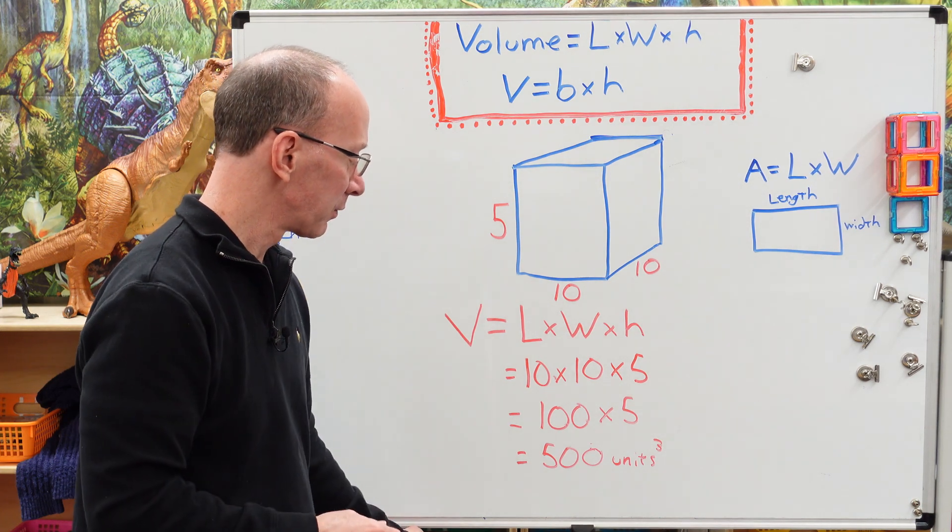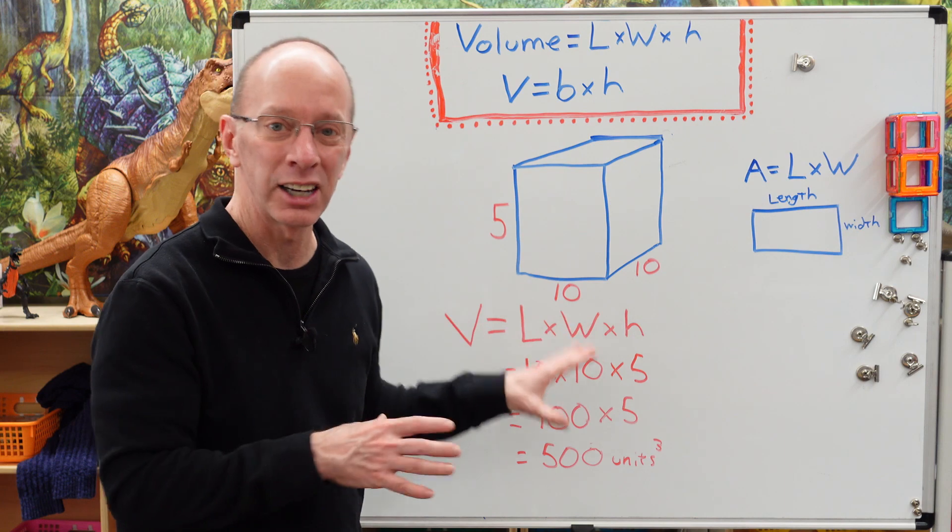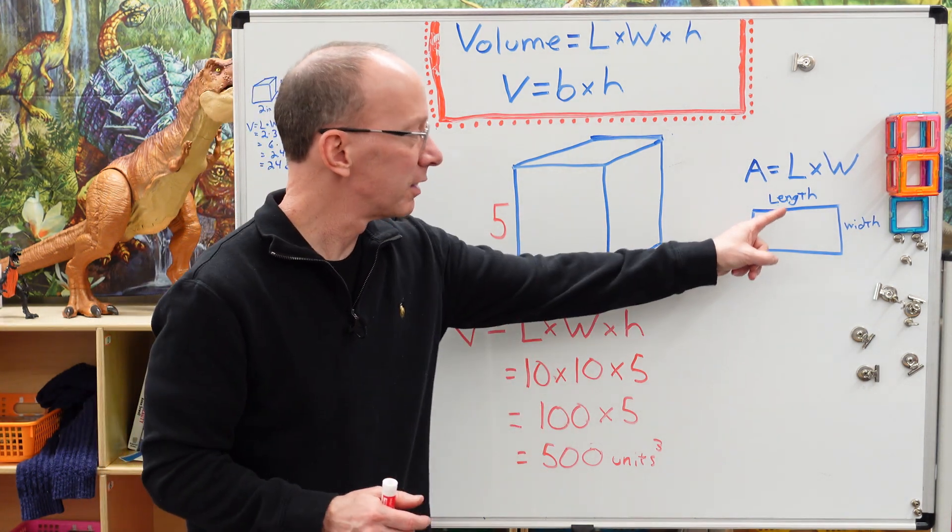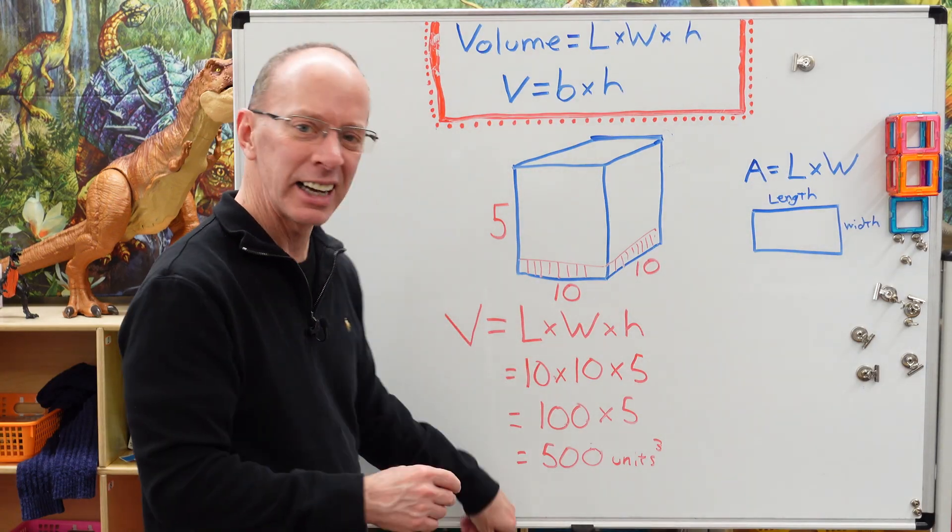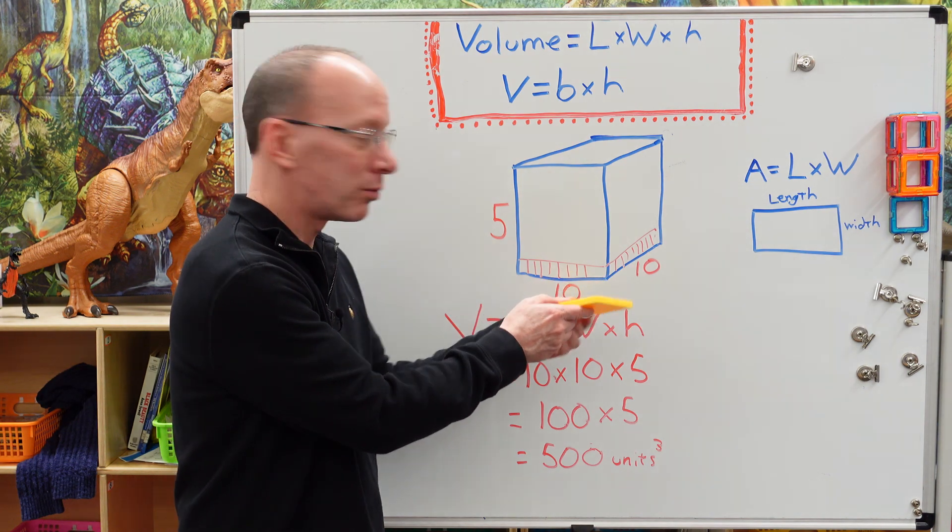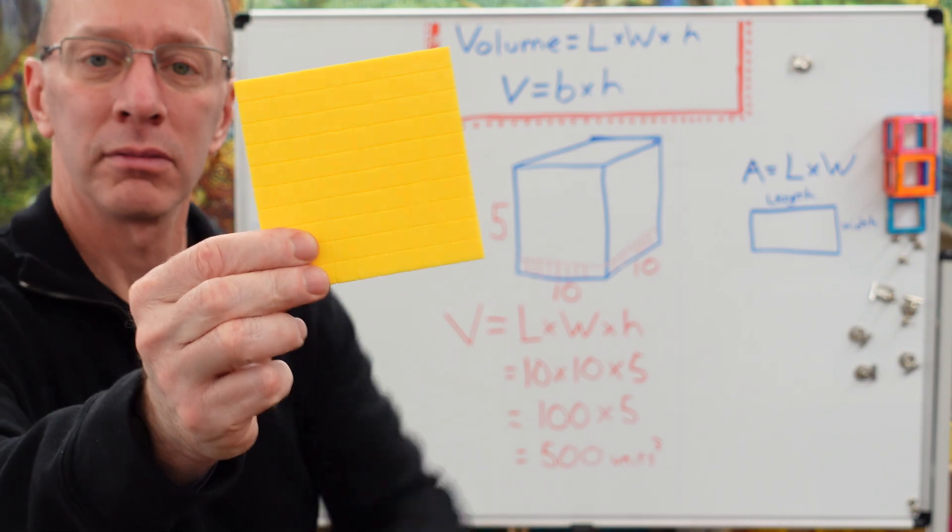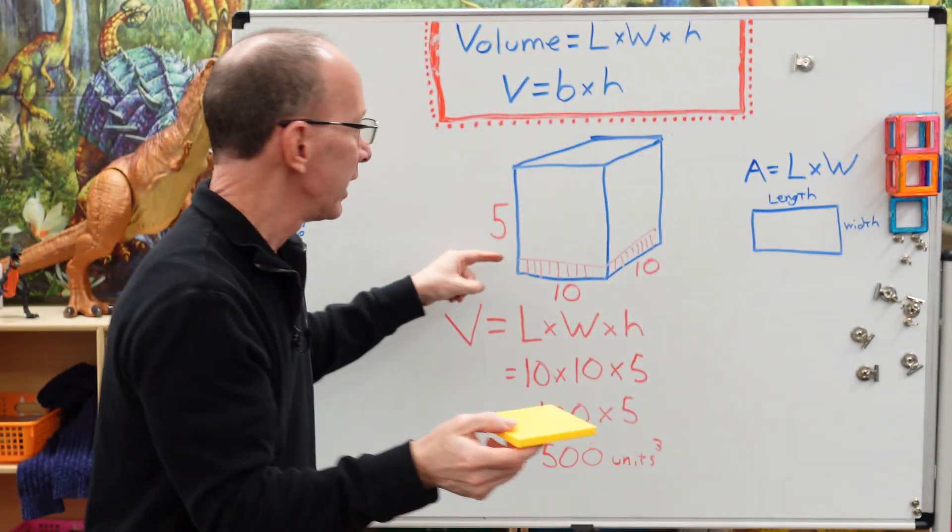Now, this is kind of interesting here. We're trying to find the volume of a rectangular prism. All right. So this right here would be the area of our rectangle. Now, to kind of see this in action, this is what it would look like if we showed just the area of our rectangle right here. So this is 10 right here, 10 right here.